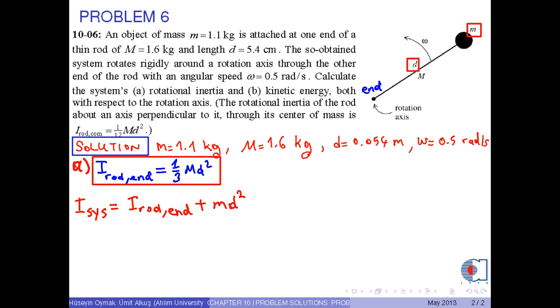Now, we put the value into this equation and after rearranging this formula, we obtain 1 over 3 times capital M plus small m times d squared.